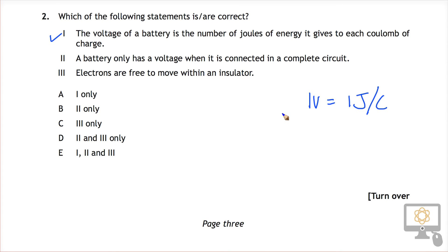Statement two: a battery only has a voltage when it's connected to a complete circuit. That's not correct. The battery's voltage is independent of whether it's connected up or not.